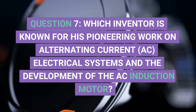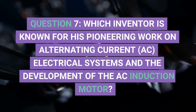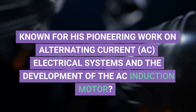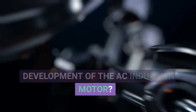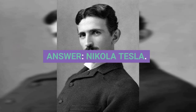Question 7. Which inventor is known for his pioneering work on alternating current (AC) electrical systems and the development of the AC induction motor? Answer: Nikola Tesla.